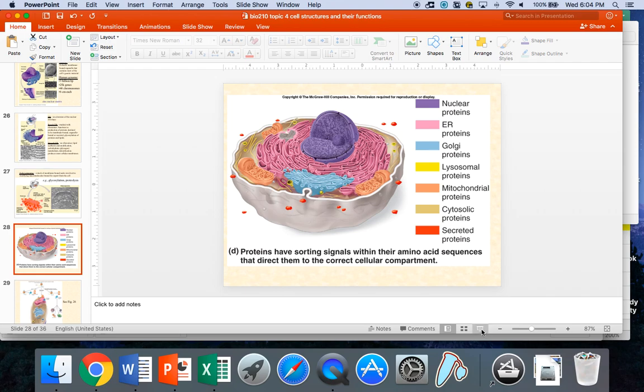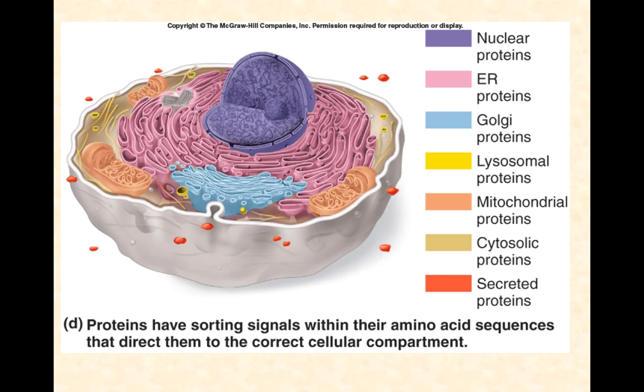An important question we need to answer is how proteins, as they're being produced within the cell through transcription and translation, find their ultimate target. We know there are proteins in the mitochondrion, but how did they get there? Where were they first produced and what carried them to the mitochondrion? We know some cells secrete proteins. How did they get from being made to being secreted?